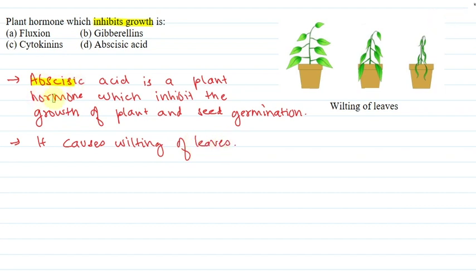So abscisic acid is a plant hormone which inhibits the growth of plant and seed germination. This is the wilting of leaves. What is the wilting of leaves? Now, what happens here?